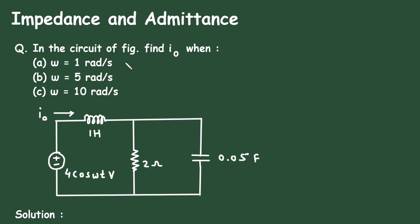If you want to see more topics on electrical and electronics engineering, check the playlist section of this YouTube channel. In this video, we will see an example on impedance and admittance. In the circuit of the figure, find IO when omega is equal to 1 radian per second. This is our first problem.